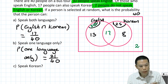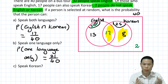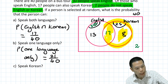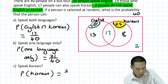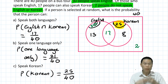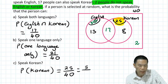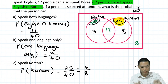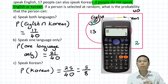Part C: what is the probability that the person can speak Korean? If you ask either the intersection group or the Korean-only group, they would say yes. So that's everyone in the Korean circle, which is 25 people. The probability of speaking Korean equals 25 over 40. We can simplify by dividing both by 5: 25 divided by 5 is 5 and 40 divided by 5 is 8. So the answer is 5 over 8. Thank you so much for watching my videos.